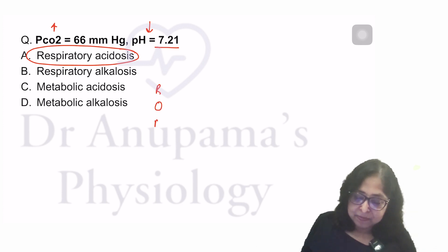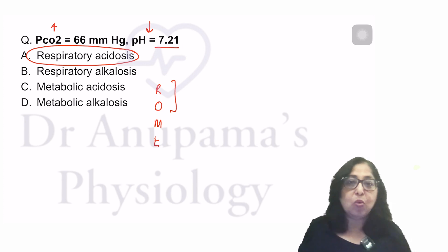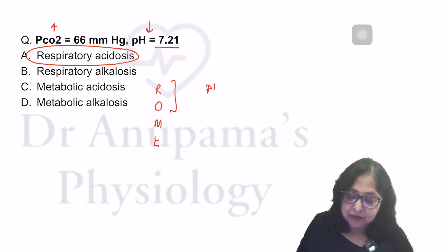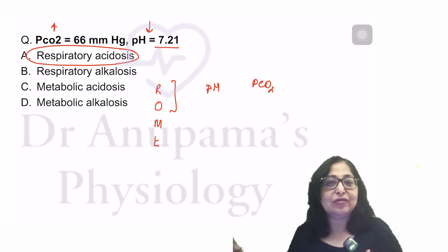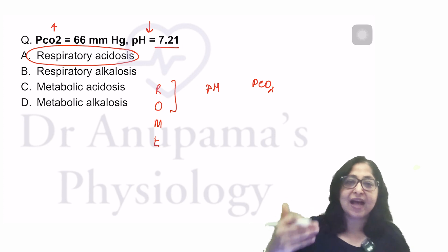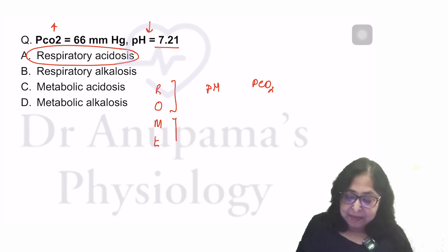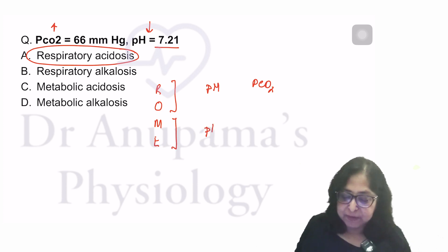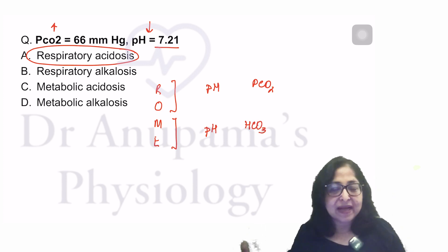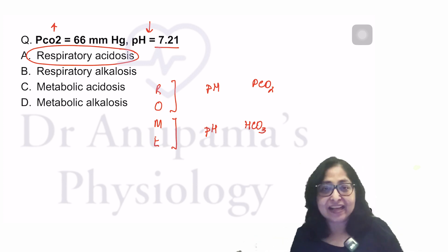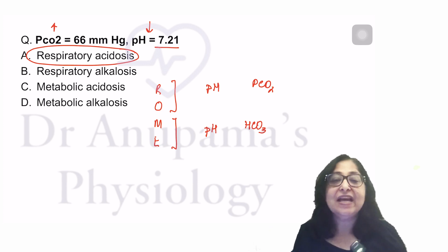You have to look at ROME — Respiratory Opposite, Metabolic Equal. In respiratory disturbances, pH and PCO2 are opposite: if pH is low and PCO2 is high, that is respiratory acidosis; if pH is high and PCO2 is low, that is respiratory alkalosis. For metabolic disturbances, look at pH and bicarbonate — they move together. Higher pH with higher bicarbonate indicates metabolic alkalosis; low pH with low bicarbonate indicates metabolic acidosis.